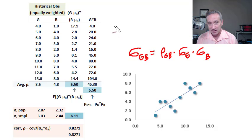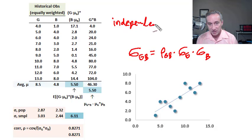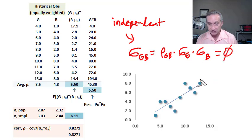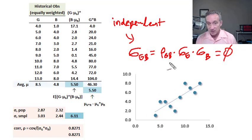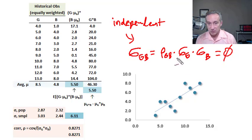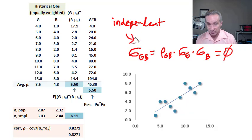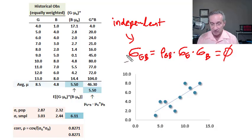An important idea is that if G and B are independent, then necessarily the correlation and covariance will be equal to zero — independence implies zero covariance. However, the converse is not necessarily true. The reason is that correlation and covariance are measures of linear relationship. So if we get a correlation of zero, there is no linear relationship, but there can still be a nonlinear relationship, which is still a form of dependence. Independence implies zero, but zero does not imply independence.